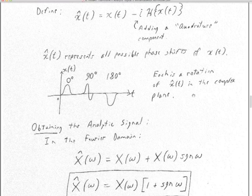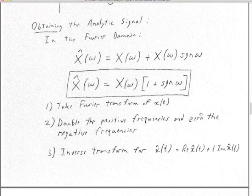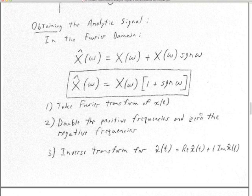Each of these is a rotation of an analytic signal on the complex plane. So how do we get the analytic signal? This is a procedure done billions of times every day when people are examining reflection seismograms for what are called instantaneous attributes, which are one of the foundations of all sorts of different kinds of more complicated attributes.